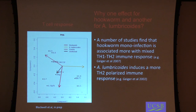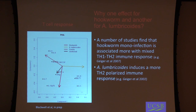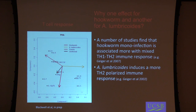Why do we see different effects with hookworm and roundworm? One possibility is that a number of studies find hookworm is associated more with a mixed TH1-TH2 response, whereas roundworm seems to produce a more purely polarized TH2 response in immune function. We have some data using whole blood stimulation with PHA and looking at the cytokines produced, and we do see something that looks like that in individuals infected with one or the other.